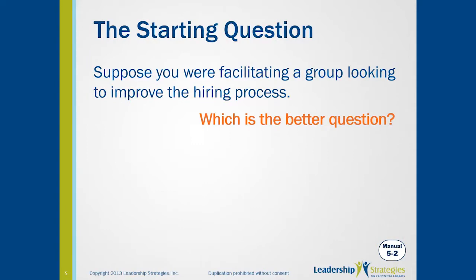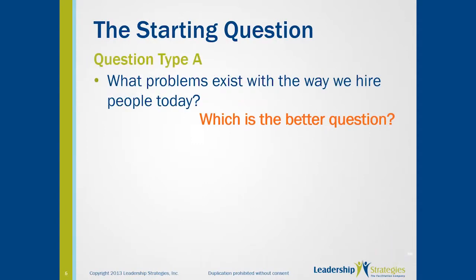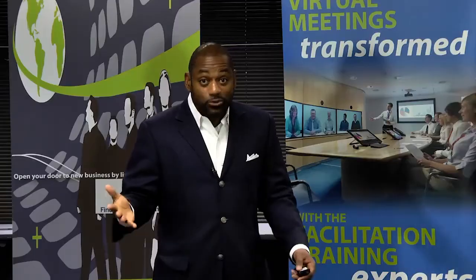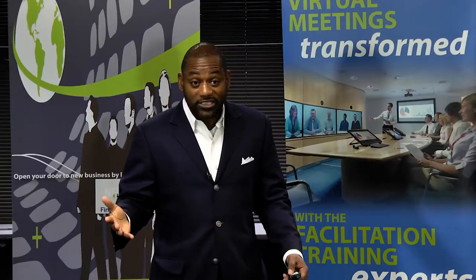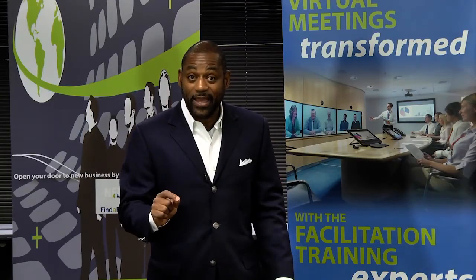Let's look at the first way, which we call a Type A question. The question would be asked: what problems exist with the way we currently hire people? That's one way to ask the question, we call it Type A.